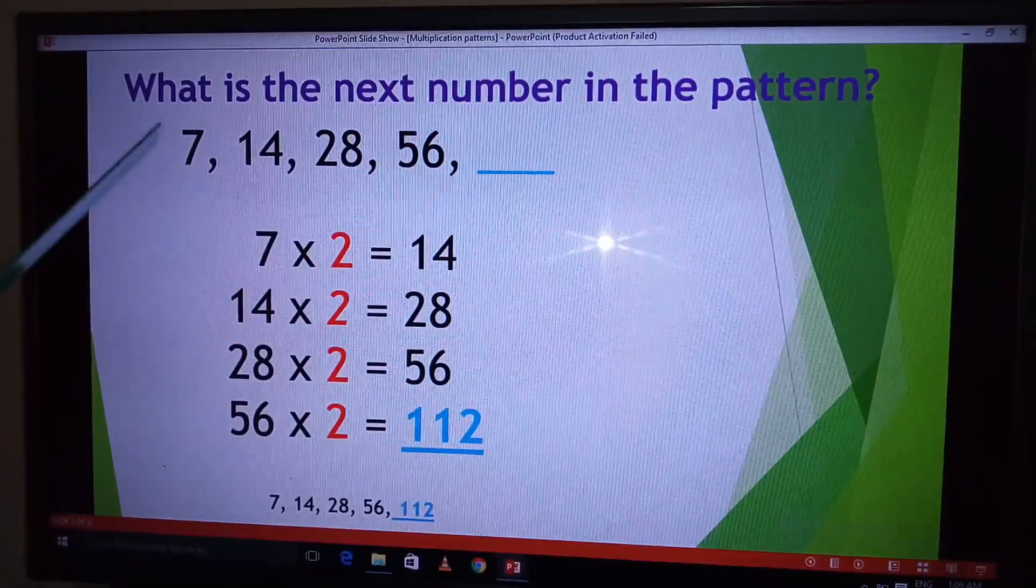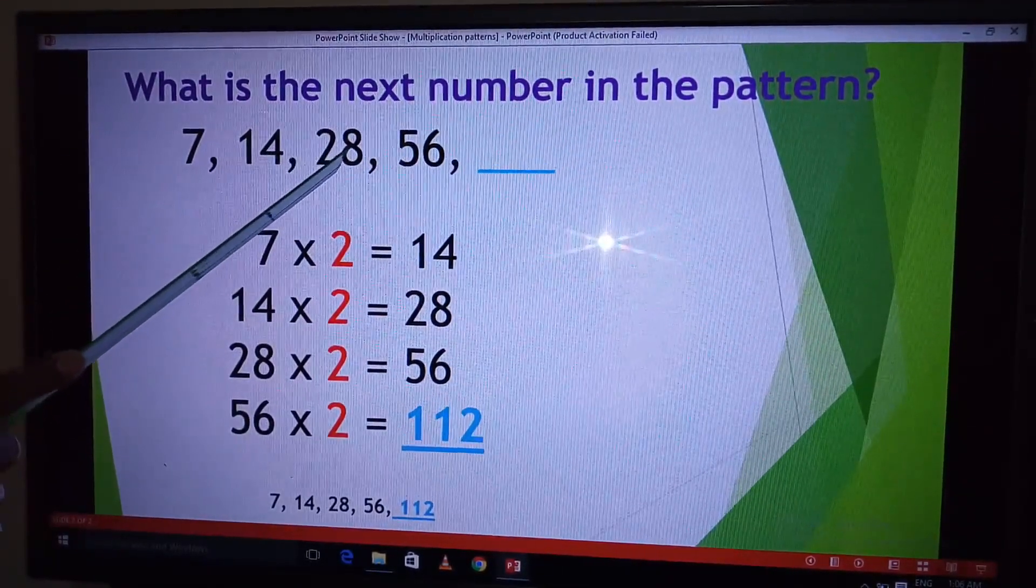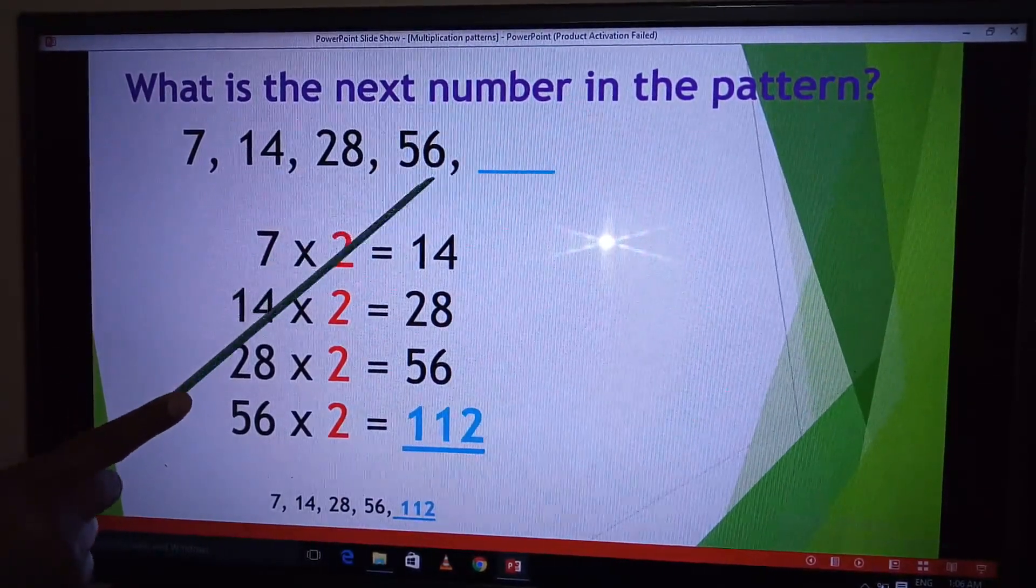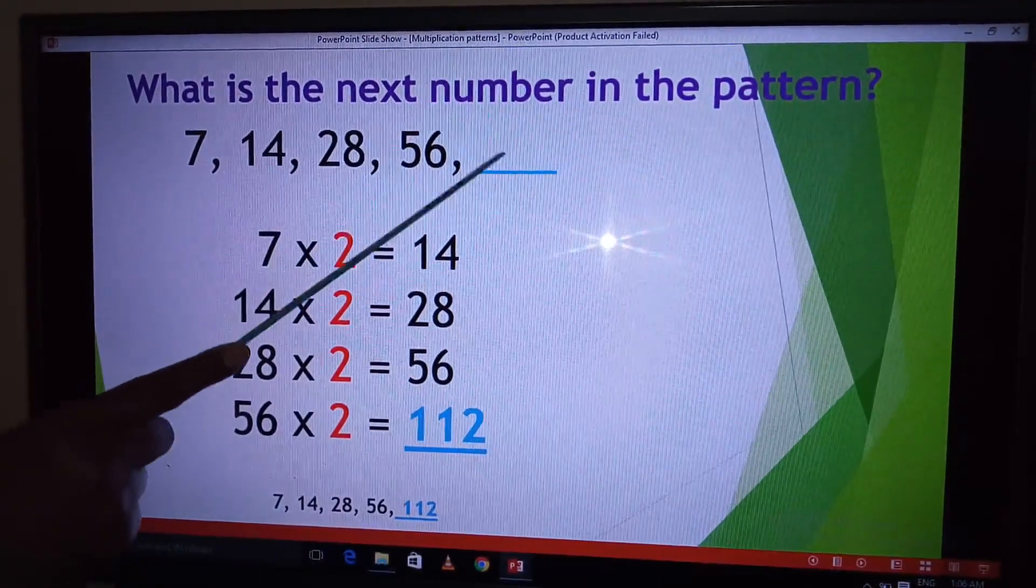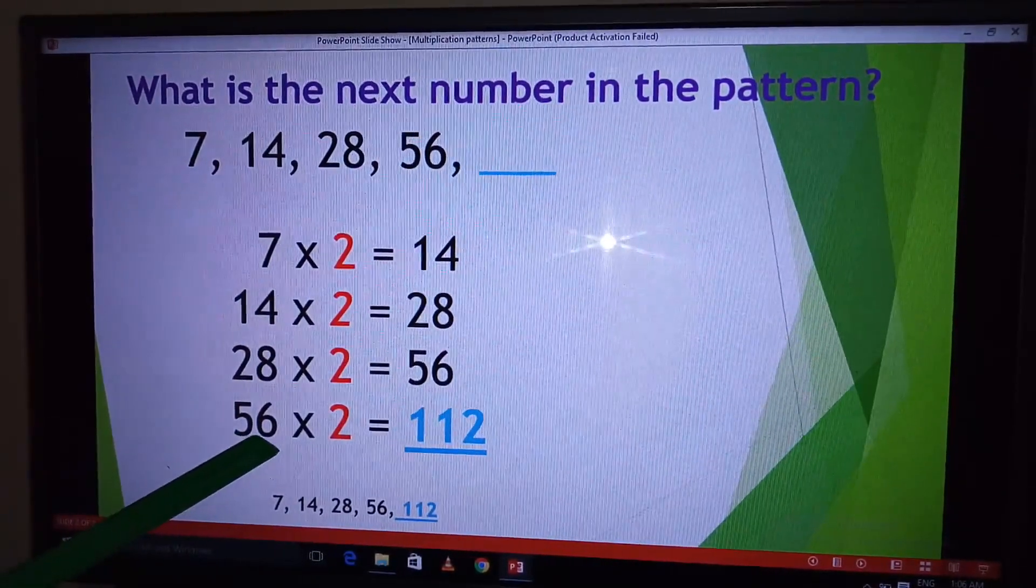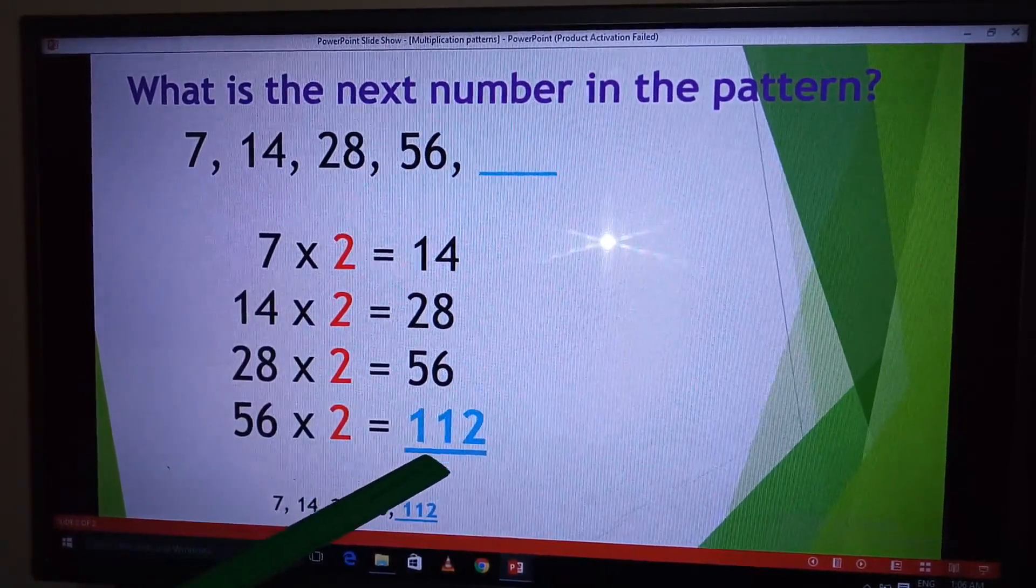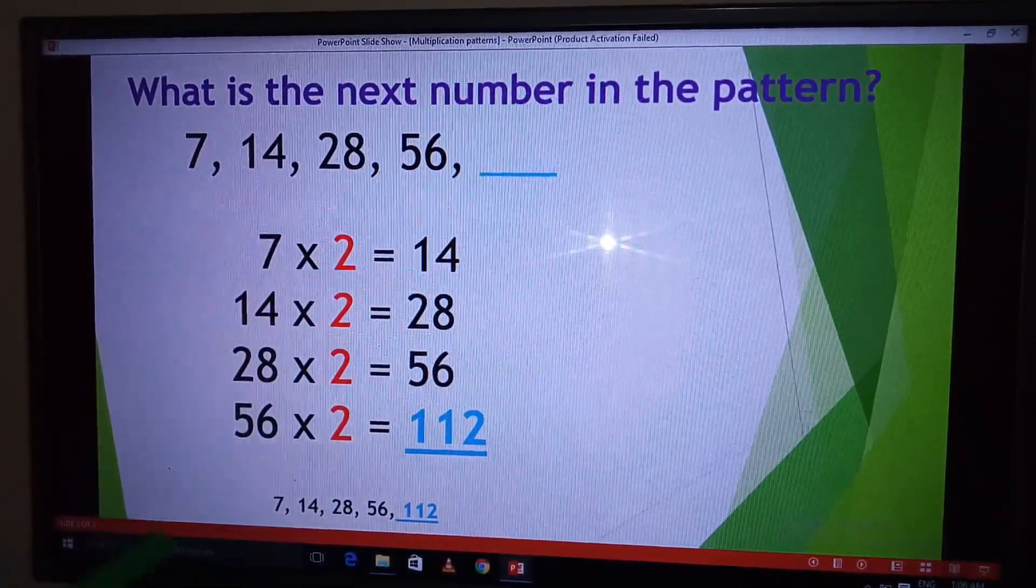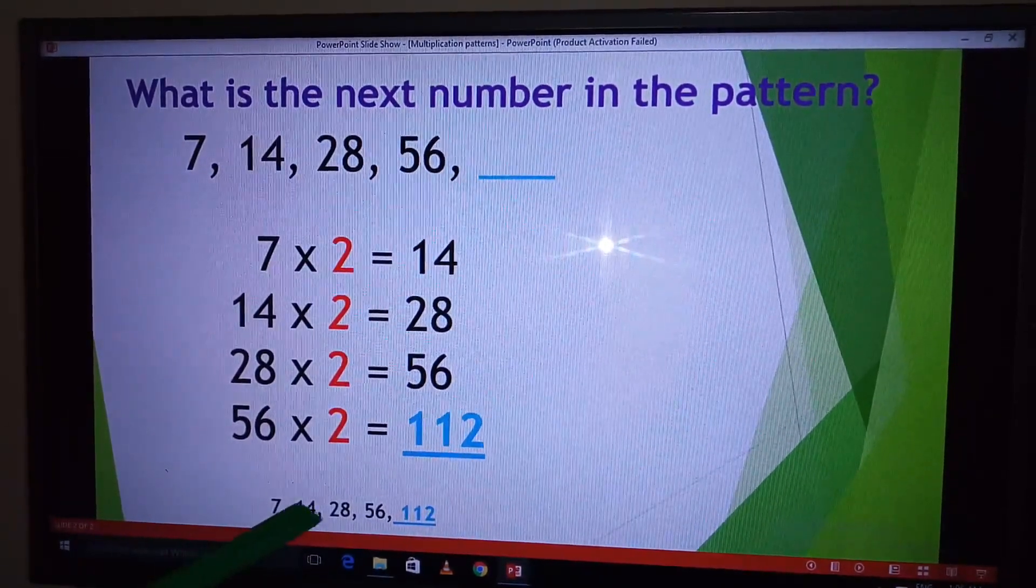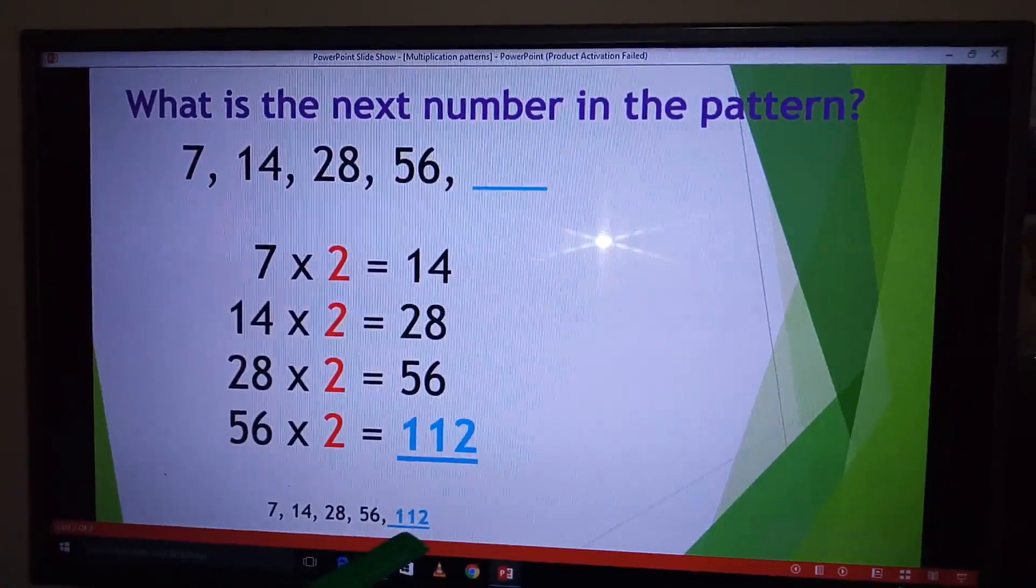Why? 7 times 2 gives us 14. 14 times 2 gives us 28. 28 times 2 gives us 56. So 56 again, times 2, we are going to get the next number. And here it is 56 times 2 gives us 112. So our next number in the pattern 7, 14, 28, 56, will be 112.